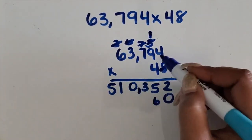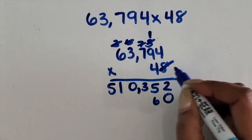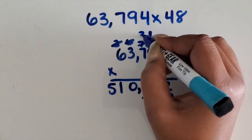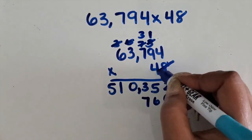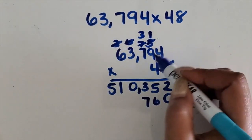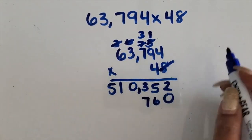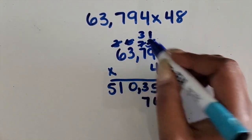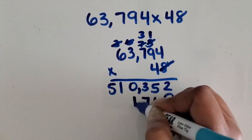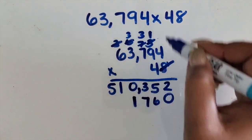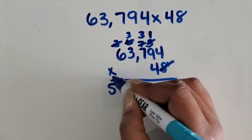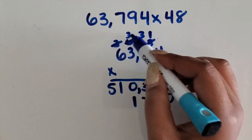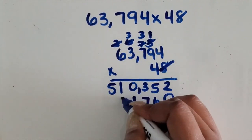4 times 9 is 36 plus 1 is 37. Regroup the 3. 4 times 7 is 28 plus 3 is 31. Regroup the 3. 4 times 3 is 12 plus 3 is 15.